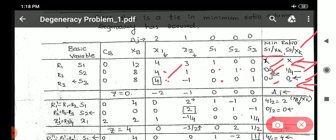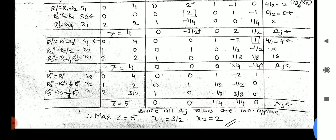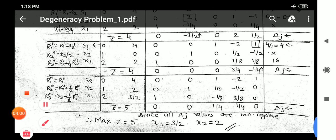And after applying or after solving subsequent steps, you will get value of z as 5 and x1 equals 3 by 2 and x2 equals 2.